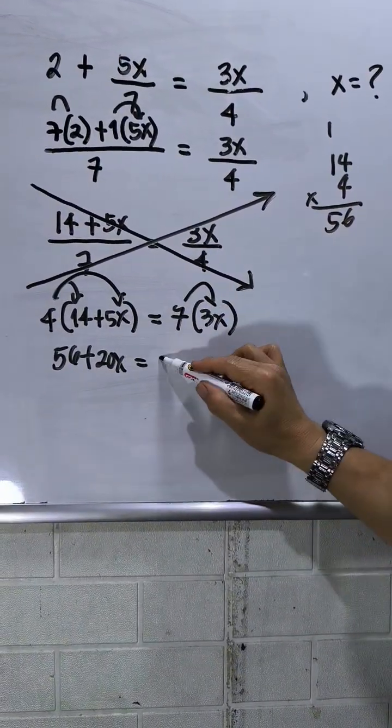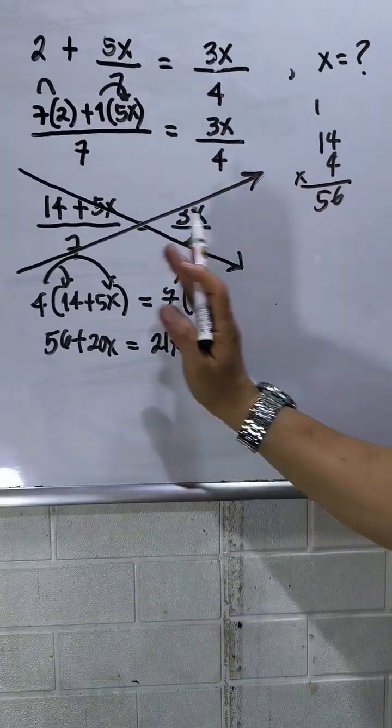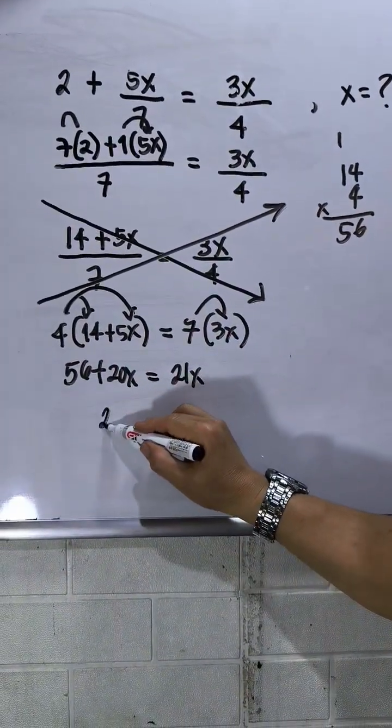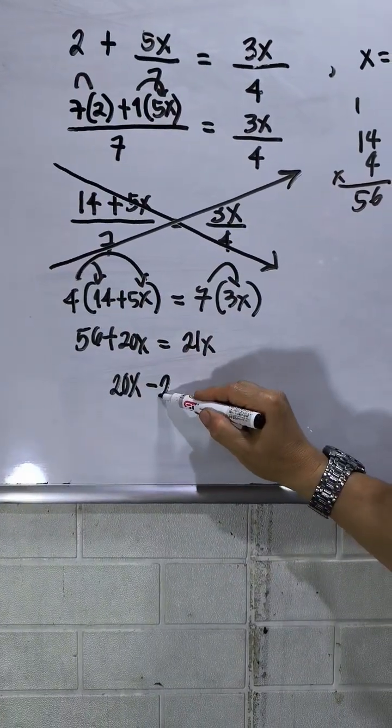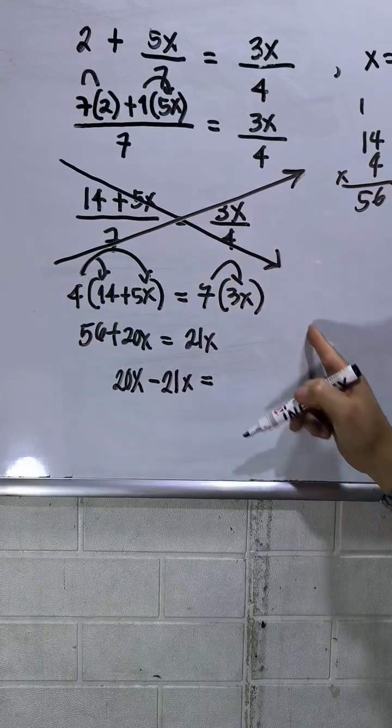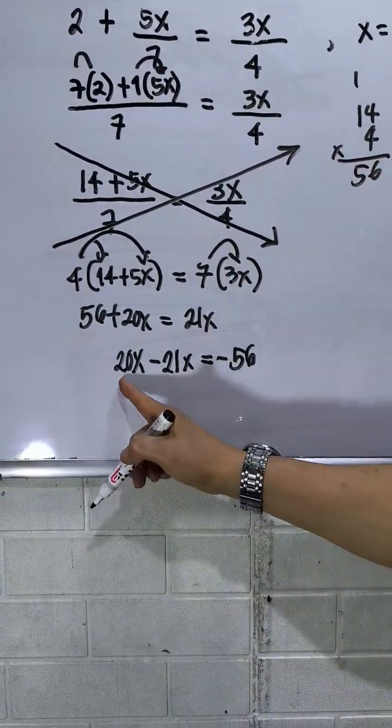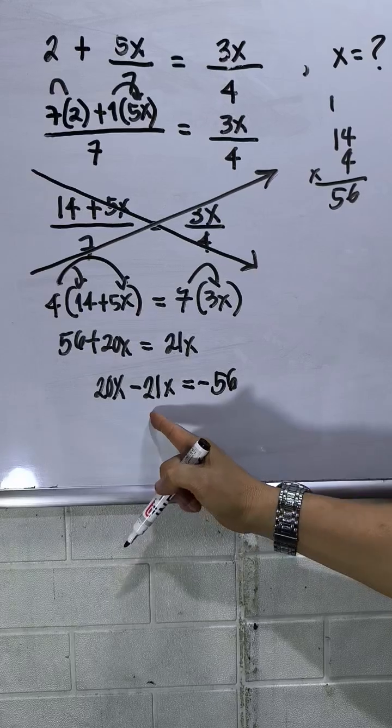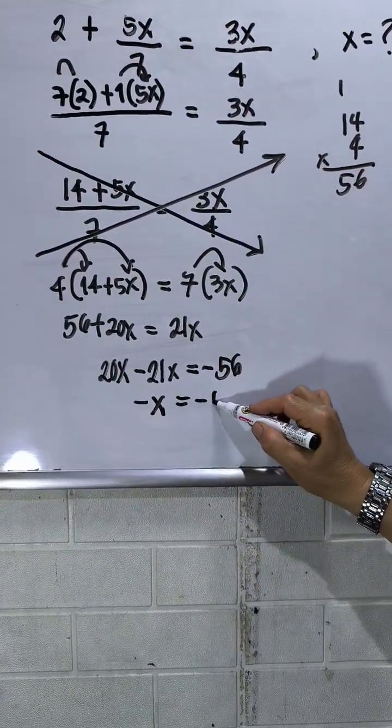Take note that all variables will be placed at the left side. So this will be 20x, then this will be transpose, this will be negative 21x. Then this will be equal to transpose to the right, this will be negative 56. So 20x minus 21x, that will be negative x equals negative 56.